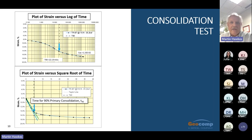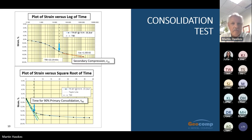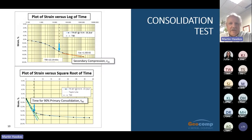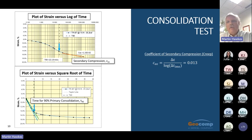Secondary compression, or creep, is determined from the slope of the log of time curve for times greater than T90. We add a subscript epsilon to the notation C-alpha so it is known that this slope refers to strain, because the same notation is also used for slopes referring to void ratio, leading to confusion and possible error. For this load increment, the C-alpha-epsilon is computed to be 0.13. The coefficient of consolidation, which governs the time to end of primary consolidation, is computed to be 0.07 square feet per day.